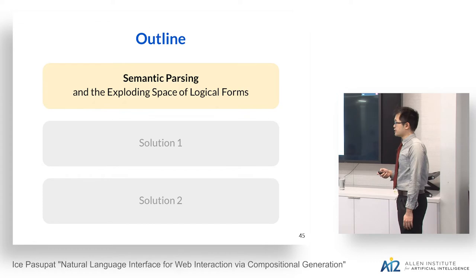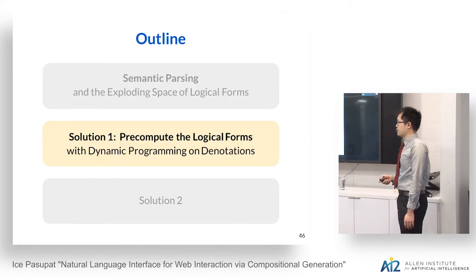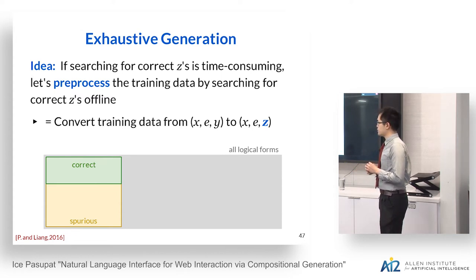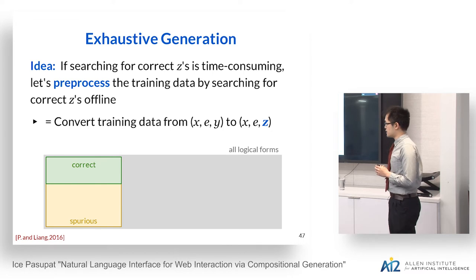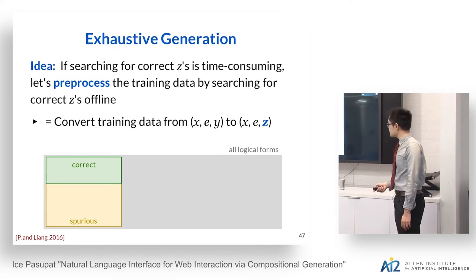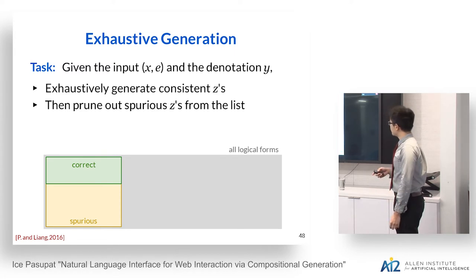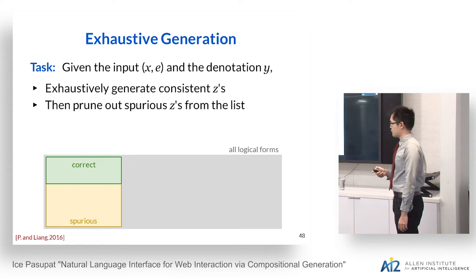With these two challenges in mind, we propose two solutions. The first is to pre-compute the logical forms. If searching for correct logical forms at training time is time-consuming, we just pre-process the training data by searching offline. This converts training data from examples with only denotations to examples with logical forms. Formally, given input X and environment E, we exhaustively generate all consistent logical forms Z, then prune out the spurious ones.